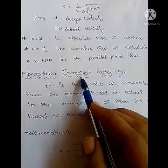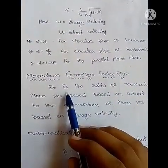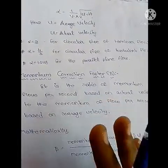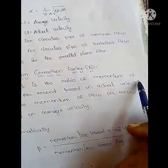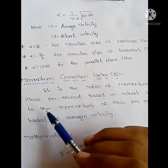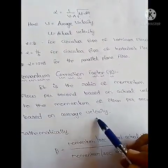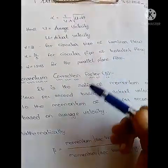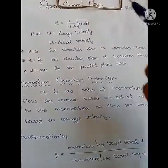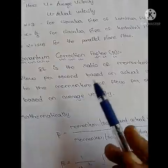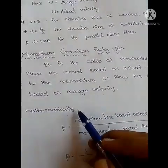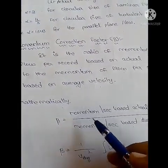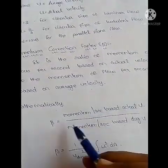Next, coming to the momentum correction factor, represented by beta (β). It is the ratio of momentum of flow per second based on actual velocity to the momentum of flow per second based on average velocity. So beta (β) equals momentum flow per second based on actual velocity divided by momentum flow per second based on average velocity.